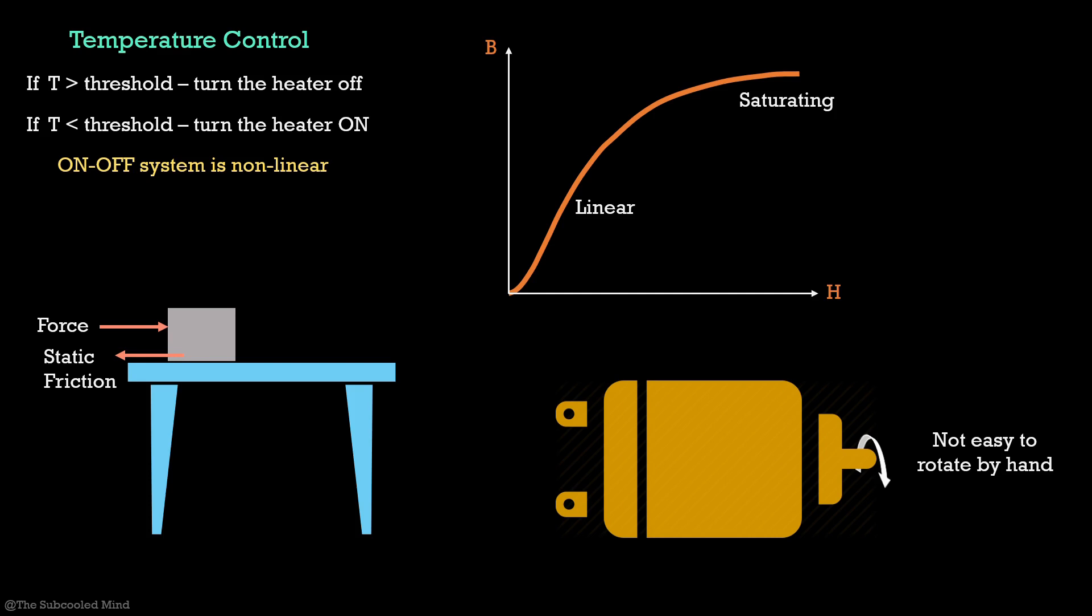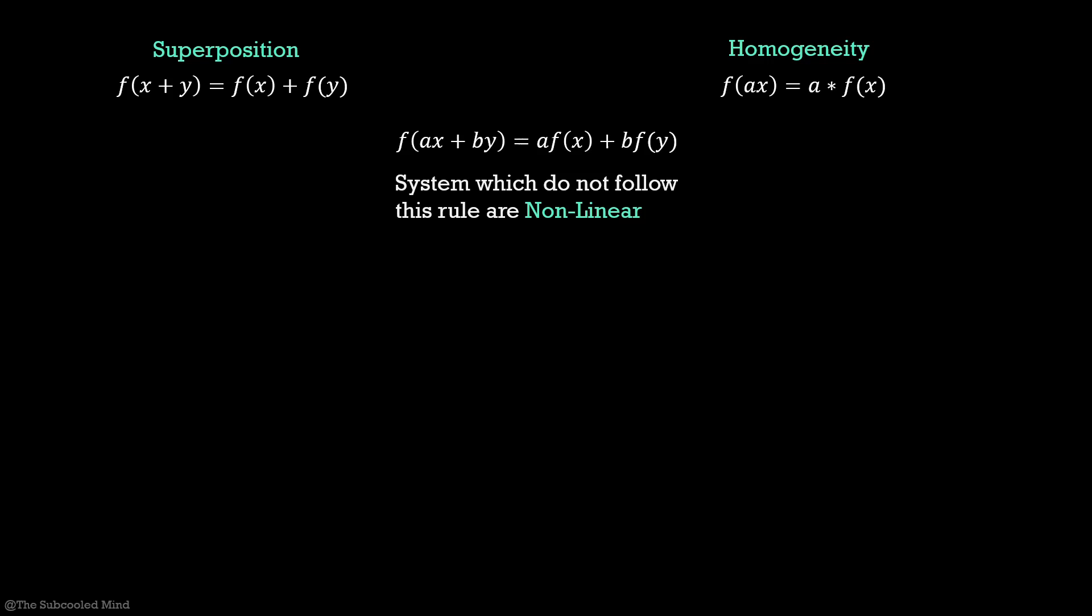But how do you mathematically define non-linearity? All systems that follow superposition and homogeneity are linear systems. If any one of this rule is violated then it is non-linear. Pause here to see these equations.